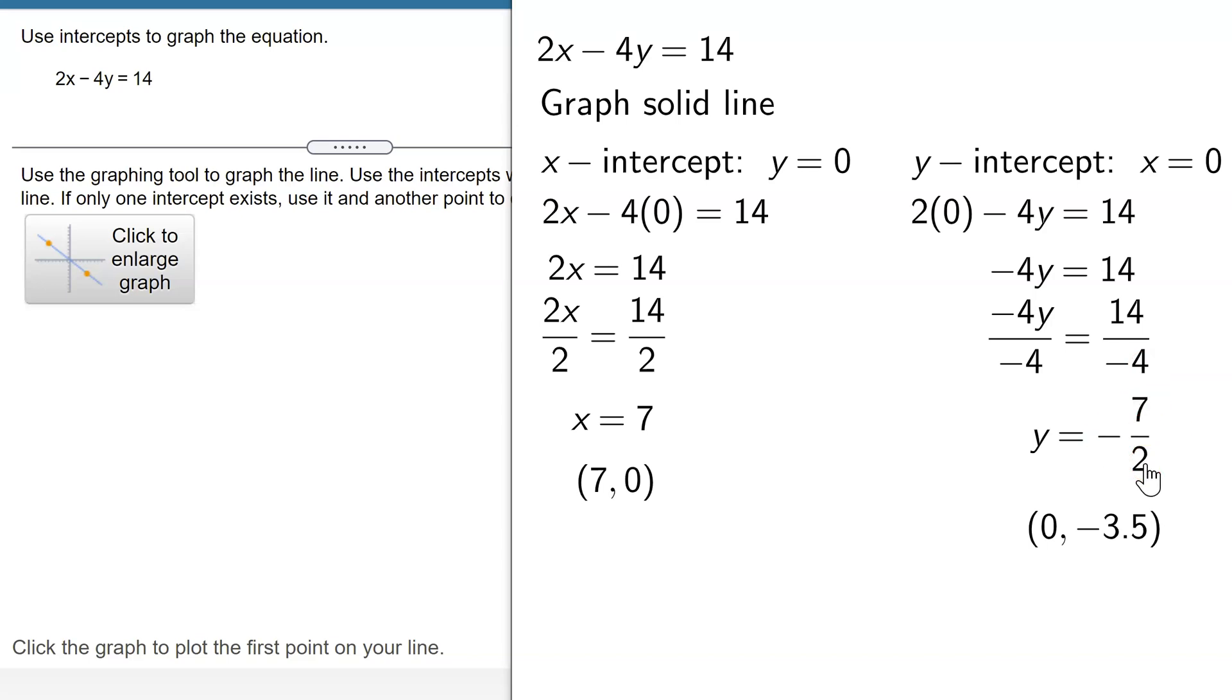But since I need to graph it, I'm going to turn that into a decimal. So my y-intercept is the ordered pair 0 comma negative 3.5.